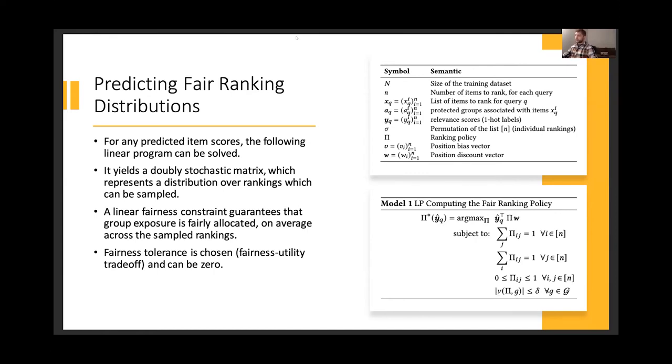Finally though, we have one extra constraint which is a fairness constraint. So typically it's mathematically impossible to guarantee fairness of exposure in a single ranking because it's a discrete structure. But if you predict ranking policies, random policies which are going to be sampled for rankings, then fairness of exposure can be guaranteed with a simple linear constraint. Which we don't show in these slides for time reasons, but you can check our paper to see the pretty simple form of these fairness of exposure constraints that are used.